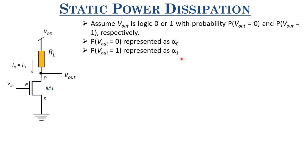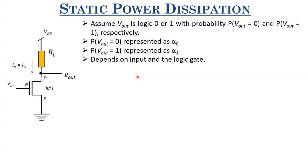Alpha zero and alpha one depend upon the input — specifically, the probability of the input being logic zero or logic one — and also on the logic gate. For a simple inverter where the input is logic zero or logic one with 50% probability (a duty cycle of 50%), the output is also high half the time and low half the time. So alpha zero equals alpha one equals one-half.